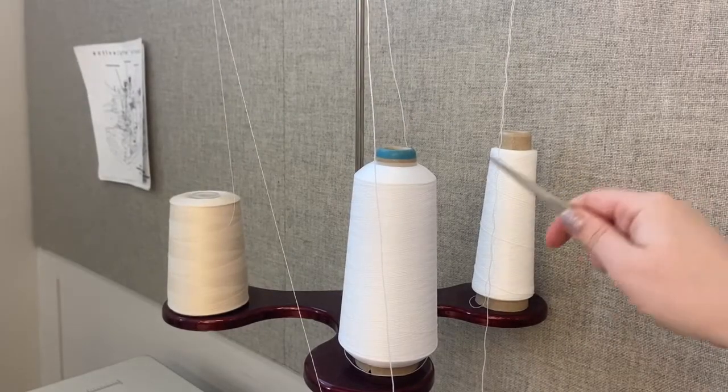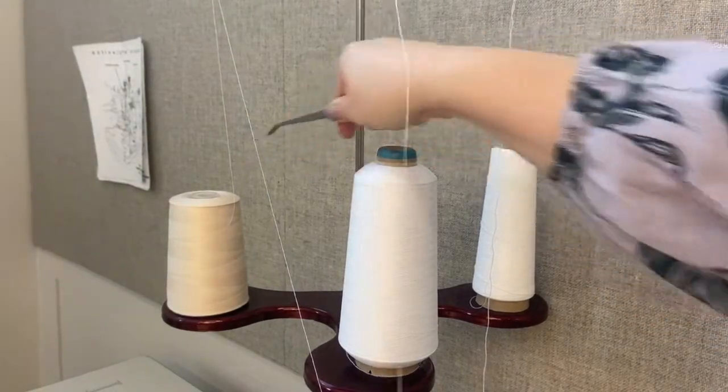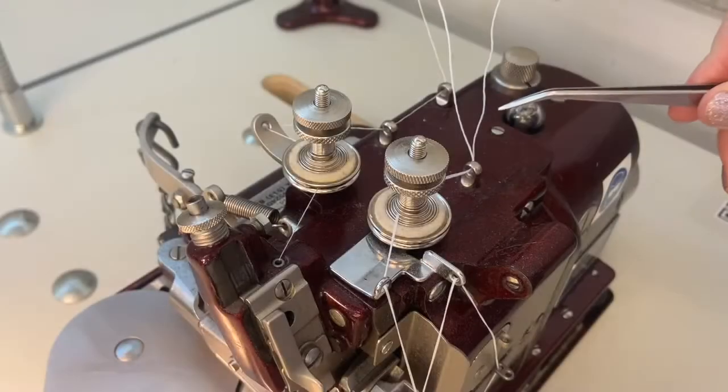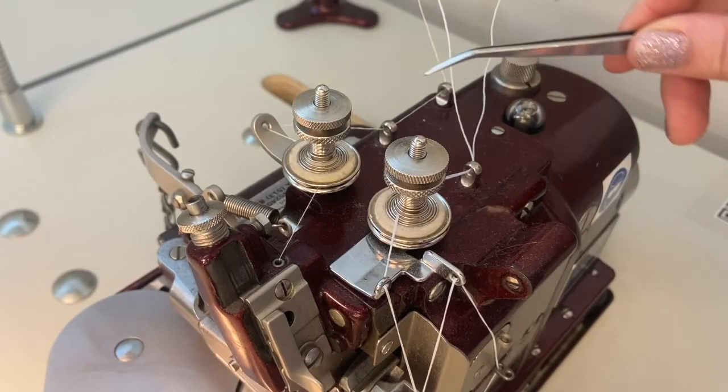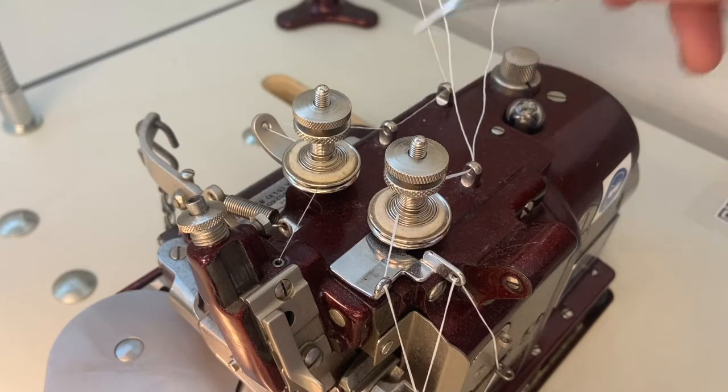This machine is set up with three threads: one top needle with polyester overlock thread, and two woolly nylon threads for the lower looper, which travel side by side through the machine for a denser fill in the final stitch. But it can also be set up for just a single looper thread.